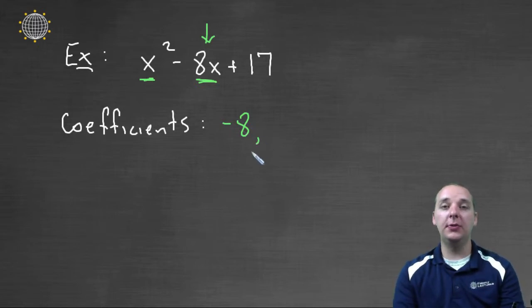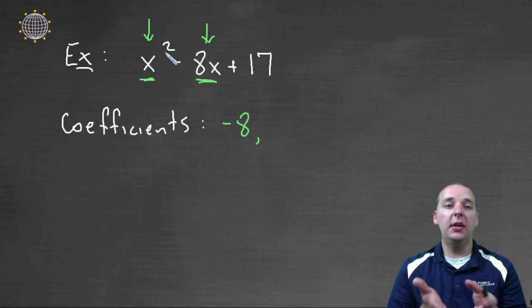But I picked this example on purpose for another reason. Here this is a very common situation as well. You've got an x squared, but it doesn't look like there's anything in front of the x squared. Well, in fact there is.